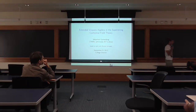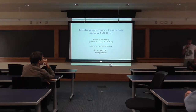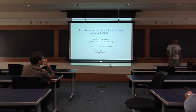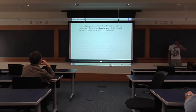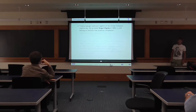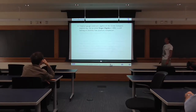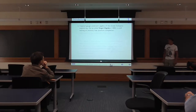This algebra had been calculated already quite a while back at the classical level, in 1985, by Siegel. That's why it's known as the Siegel algebra. And since then, it's still lacking an anomaly-free quantum completion.